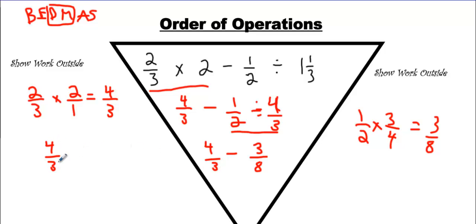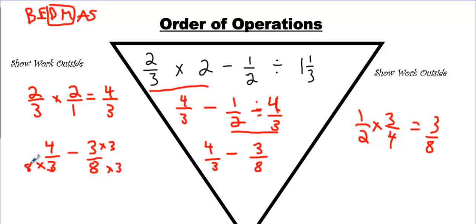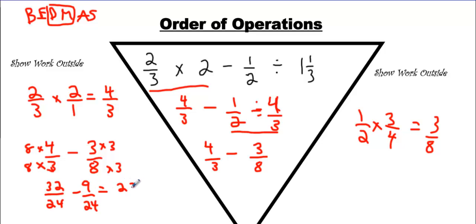We have 4 over 3 minus 3 over 8. What's common between 3 and 8? Let's see — 3, 6, 9, 12, 15, 18, 21, 24. And so does 8 — 8 can make 24. Count by 8, three times. So we got 3 eights and we're going to need 8 threes. That's going to make 32 over 24 subtracted by 9 over 24. And 32 minus 9 is 23 over 24. And that's your answer.